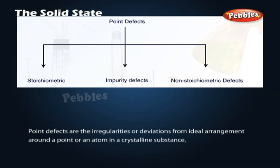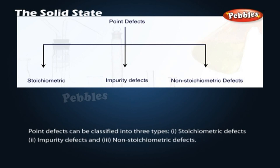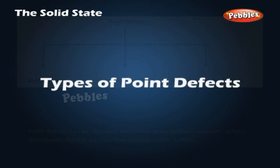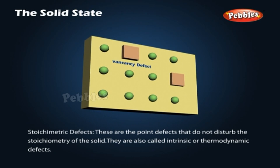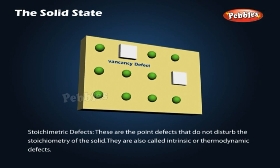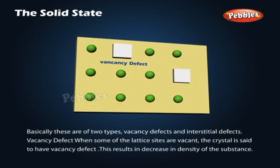Point defects are irregularities or deviations from ideal arrangement around a point or an atom in a crystalline substance. Line defects are irregularities in entire rows of lattice points. Point defects can be classified into three types: stoichiometric defects, impurity defects, and non-stoichiometric defects. Stoichiometric defects do not disturb the stoichiometry of the solid and are also called intrinsic or thermodynamic defects. These are of two types: vacancy defects and interstitial defects.